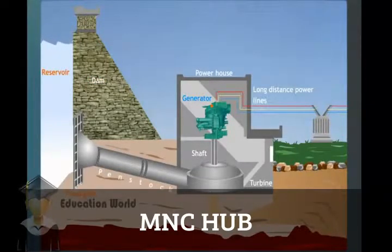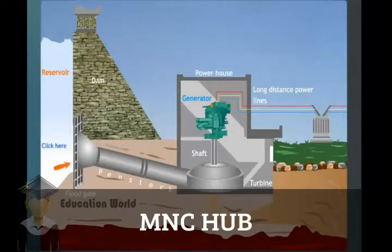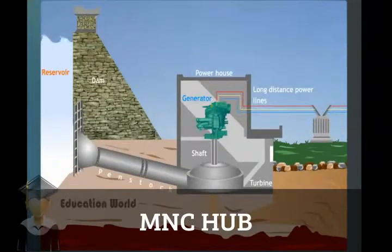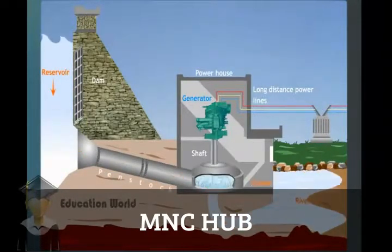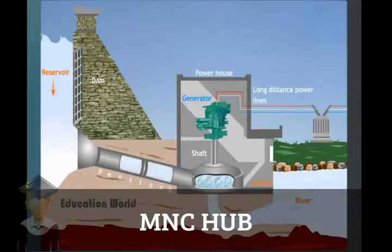At the bottom of the dam, there is a floodgate. Water flows through the penstock and rotates the turbine, which is placed at the end of the penstock.